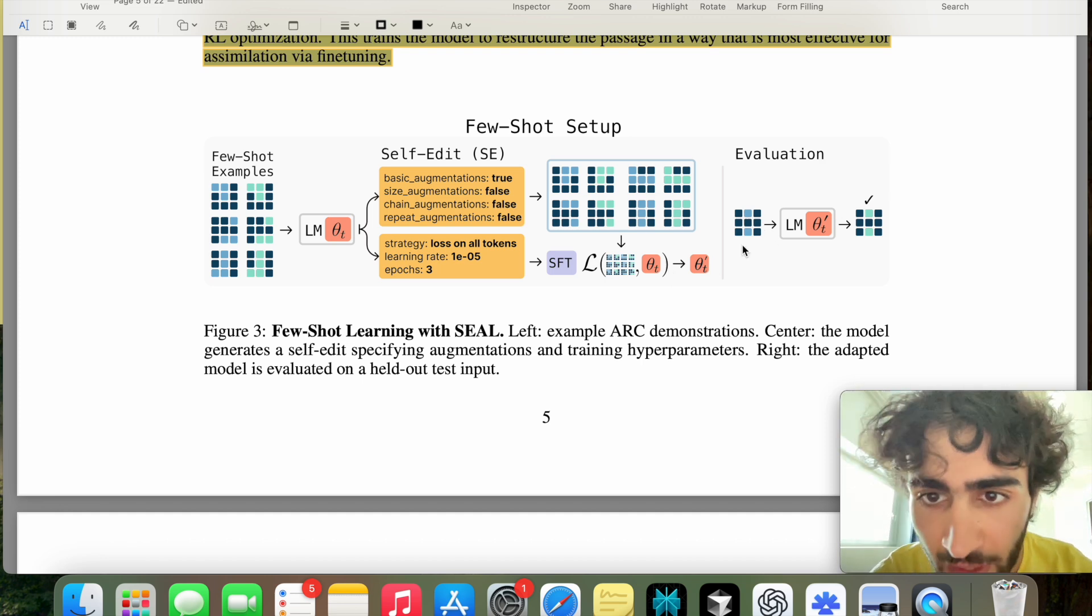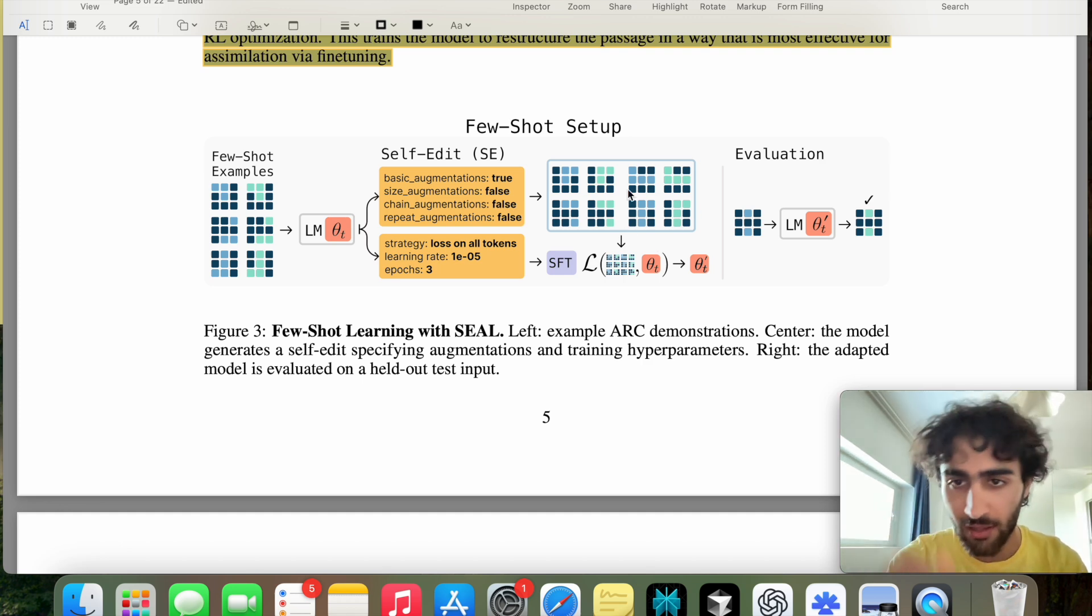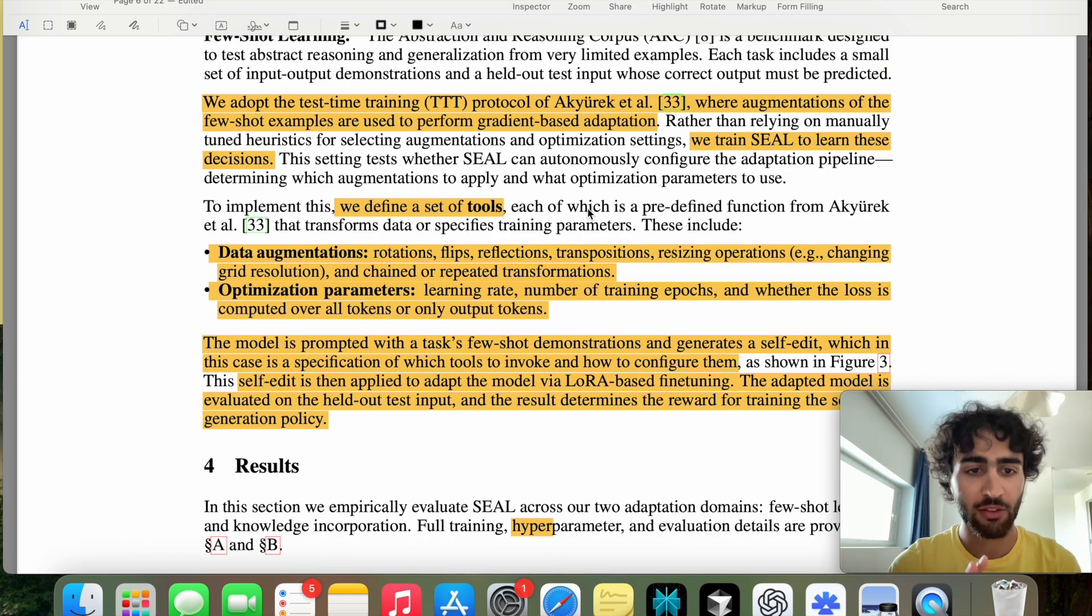So if you look here, this exact H is not in the training set, of course, because you don't mix training and test. And then if this is correct, in that case, we will adopt or we will not adopt, but we will accept this for our reinforcement learning policy, which is what is generating self-edits. So I kind of mentioned everything here already, augmentations a few examples are used to perform gradient-based adaptation. And these augmentations are kind of either data augmentations, or yeah, these are the augmentations.